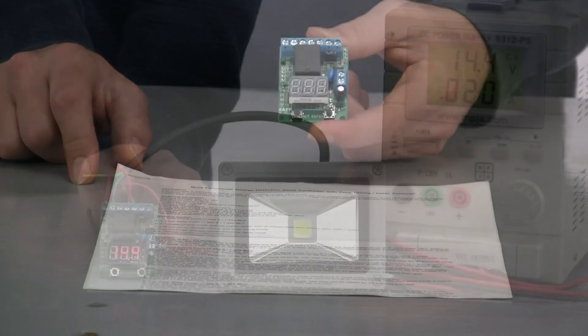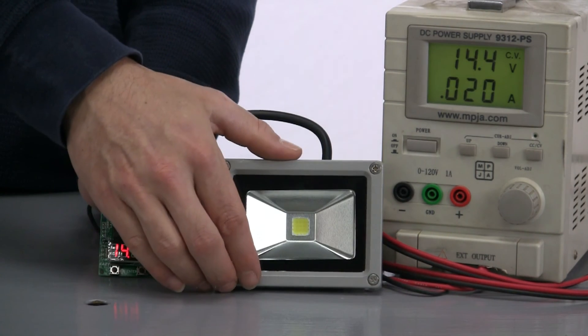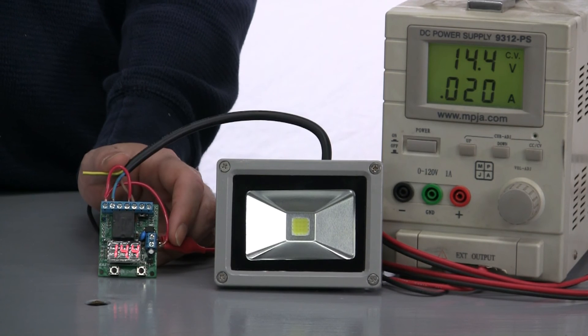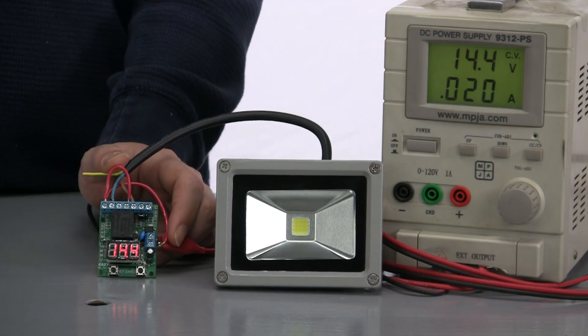This also works as a load controller, meaning that it will turn on say DC lighting like this when your battery is full and it will turn it off when it gets too low.